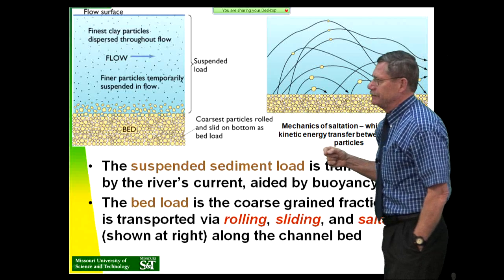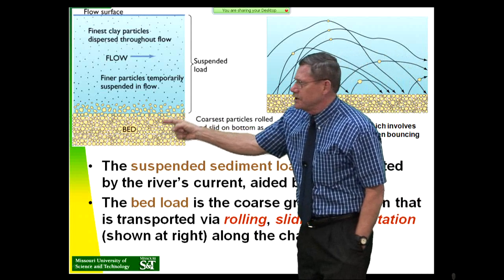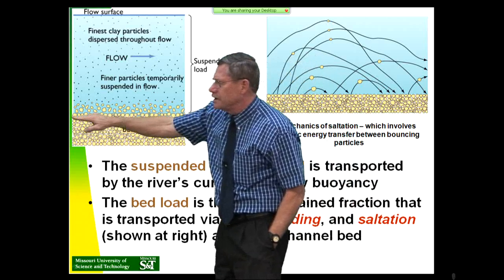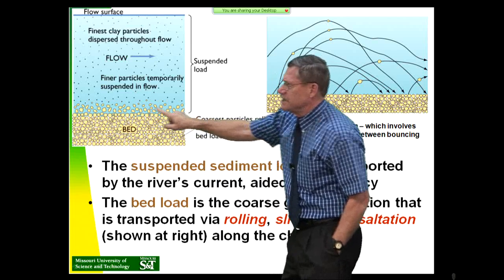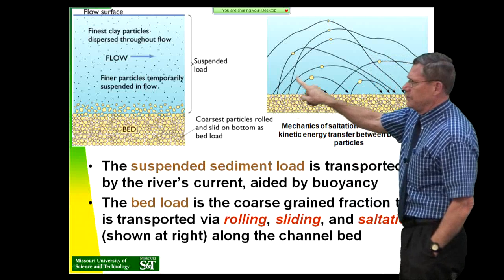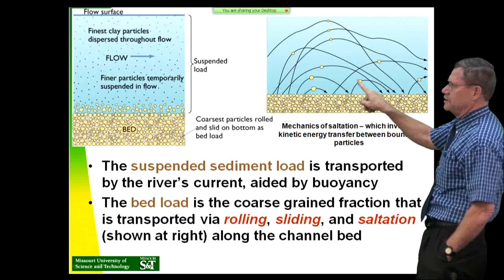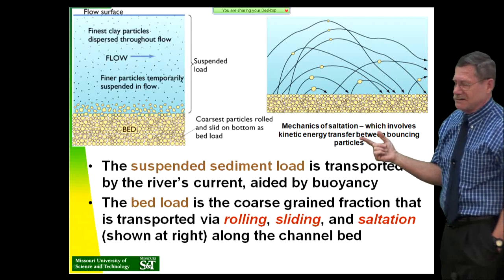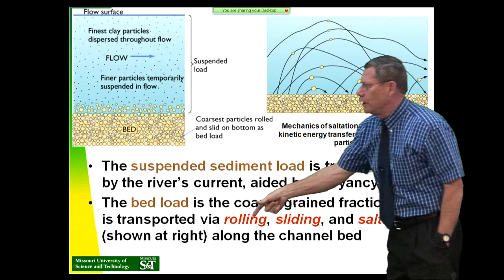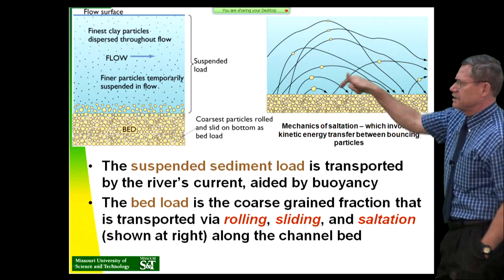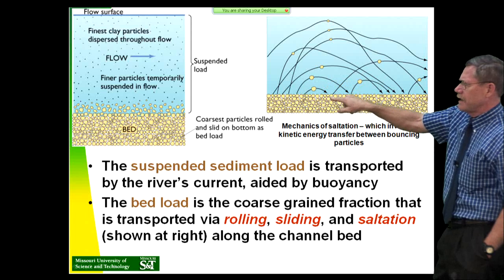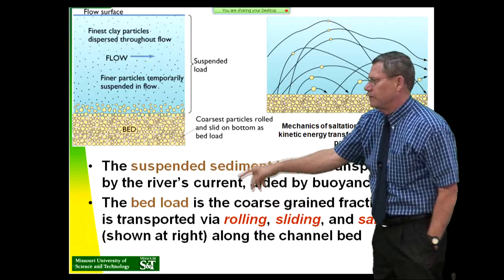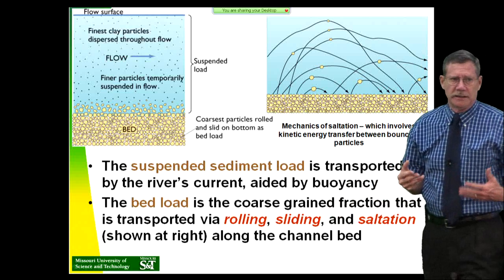The bed load is down near the bottom - that's the saltating stuff that builds up on your feet when fly fishing with waders. It's bouncing along like billiard balls, one bouncing into another transferring kinetic energy. The coarse-grained fraction moves by rolling, sliding, and saltation. Saltation is where you pick up, hit, and transfer energy; sliding is just moving along a little bit with imbrication; rolling is just rolling over. A lot of rolling occurs in any steep-gradient mountain stream.